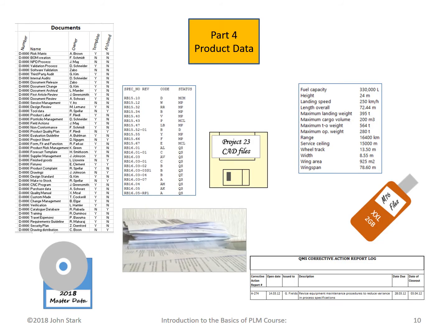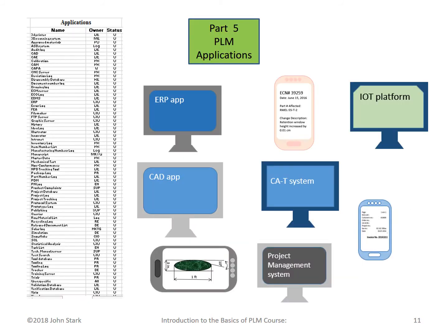Part Four addresses product data — the data that defines and describes the product throughout its lifecycle. There's a lot of it; I've worked with companies that have thousands of data items and more than a hundred different documents describing a single product. All this product data has to be organized and managed. Part Five addresses PLM applications, used throughout the product lifecycle. You may have heard of product data management systems, PDM systems — that's one application. In many companies there are dozens more, and their organization and management is part of PLM.